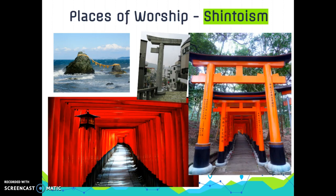For Shintoism, we see a lot of individual meditation and a huge emphasis on nature and connecting with nature. These structures are called Torii gates, and they are located in places to mark a transition from the human world to a more sacred and religious world. They are the entrances to Shinto shrines or places considered sacred. Torii gates are found all over Japan, and most people go there for individual worship and meditation.